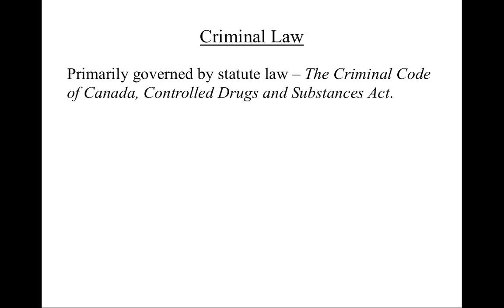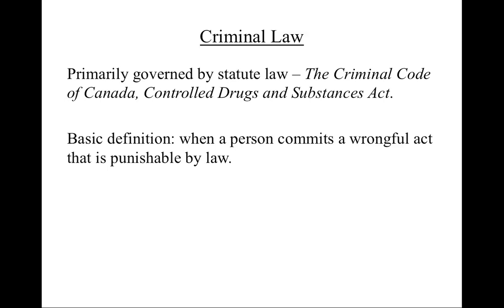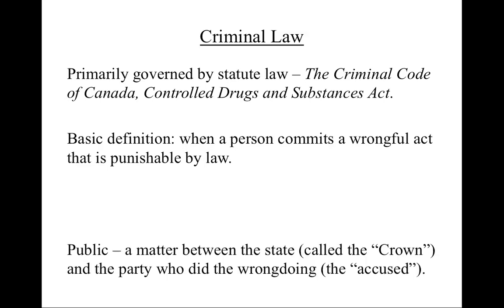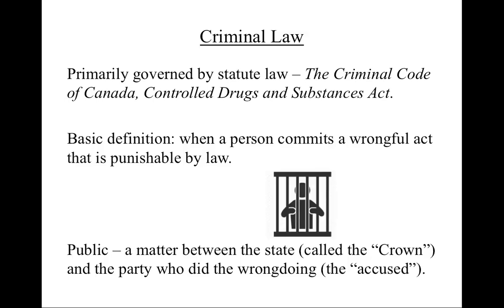The next area of law is criminal law. Unlike both contract and tort law, criminal law is primarily governed by statutes — mostly the Criminal Code of Canada, but there are other crimes in acts like the Controlled Drugs and Substances Act, which deals with illegal drugs, or the Immigration and Refugee Protection Act, which deals with human smuggling. Criminal law covers a situation where a person commits a wrongful act that is punishable by law. Where torts and contract law are private, criminal law is public. The alleged wrongdoer is a private citizen called the accused, but the other party is the state — often called the Crown — who acts in the public interest. What is at stake is not money, but the liberty of the accused. Criminal law only punishes the very worst behavior, and it is extremely rare for any but the most egregious acts to proceed by way of a criminal charge. Almost all medical cases in the courts proceed by way of tort law.